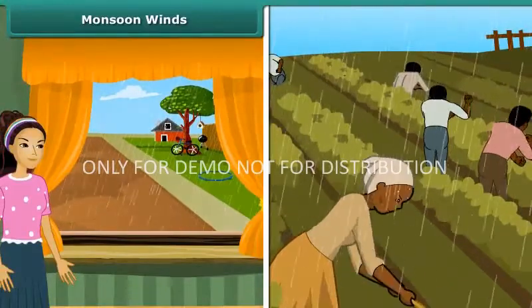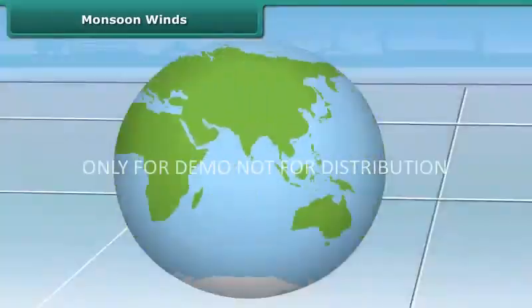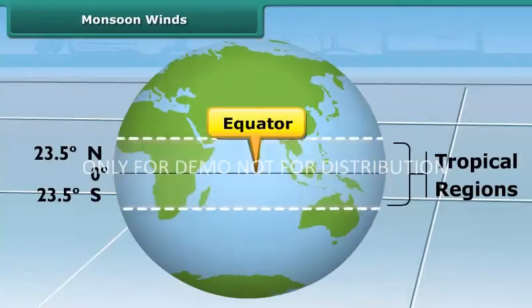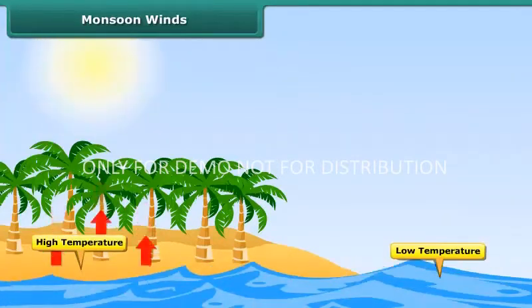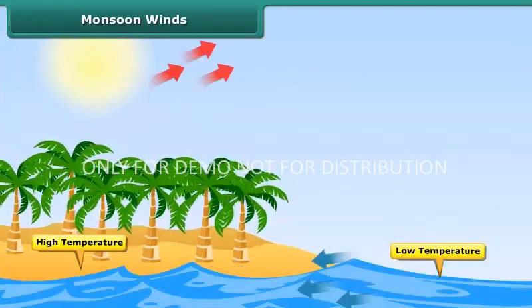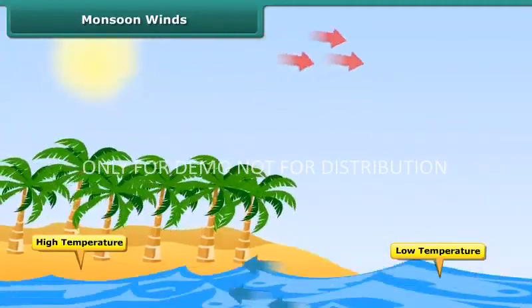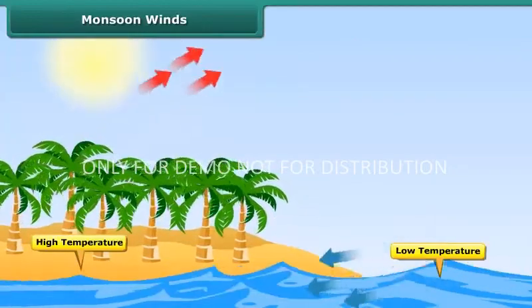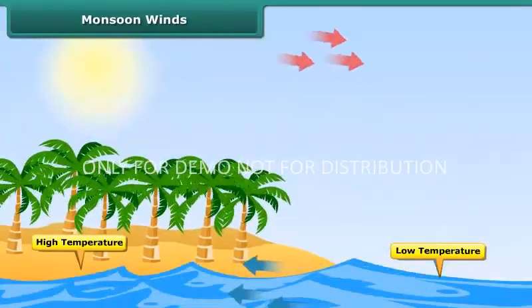All of us get a feeling of relief from the long hot summers during the monsoon season. During the hot summers, the land near the equator warms up very quickly. The temperature of the land is always higher than that of water in the oceans. The warm land heats the air above it; the warm air rises up and expands, causing winds to flow from the oceans towards the land. We call these winds as monsoon winds. The monsoon winds carry water from the oceans and bring rain.